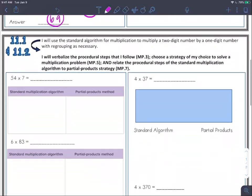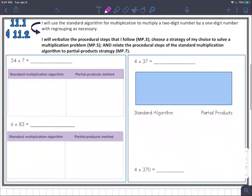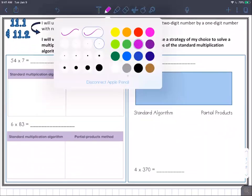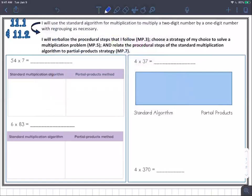We have a second half of our notes. So continuing our strategy here, let's take a look at 54 times 7. We are going to do the standard multiplication algorithm and then also partial products.